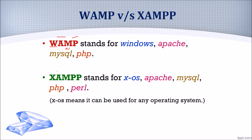While XAMPP stands for XOS, again Apache, MySQL and PHP, similar to WAMP. There is one more P which is for Perl. And what do we mean by XOS? It means it can be used for any operating system.